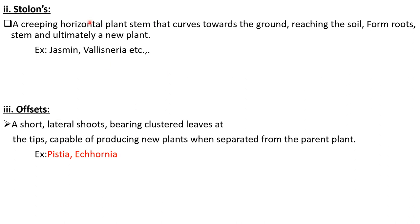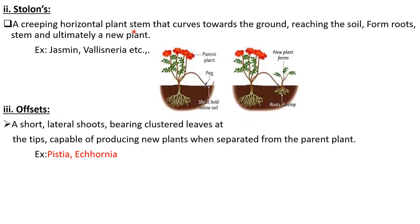The another creeping stem is stolons — a creeping horizontal plant stem that curves towards the ground, reaches the soil, forms the roots and stem, and ultimately becomes a new plant. If a stolon breaks, this portion is capable of developing into a new plant. The best examples are jasmine and vallisneria.